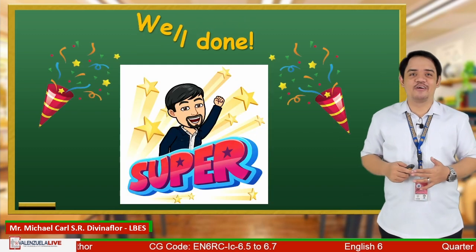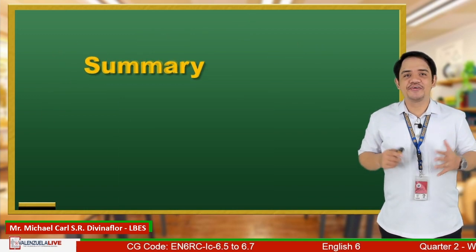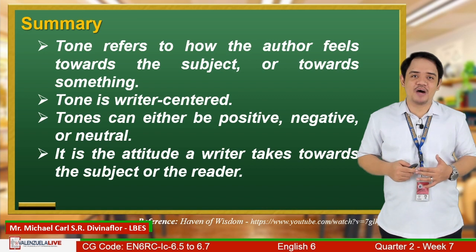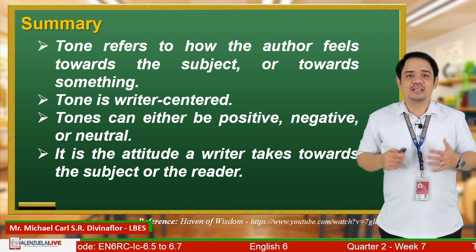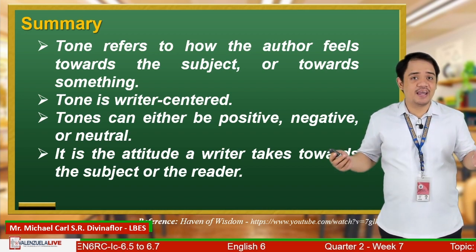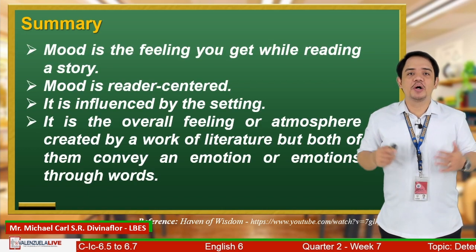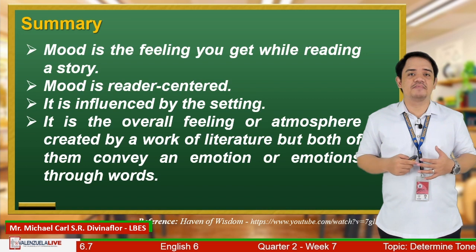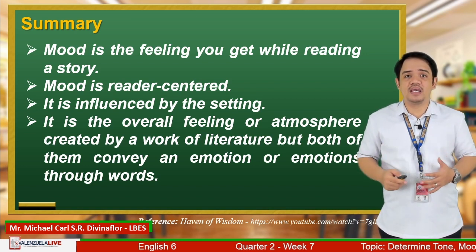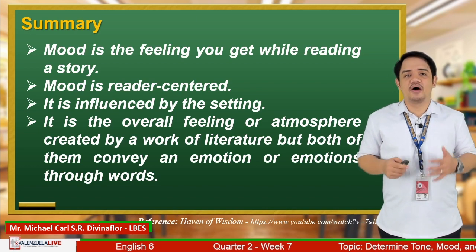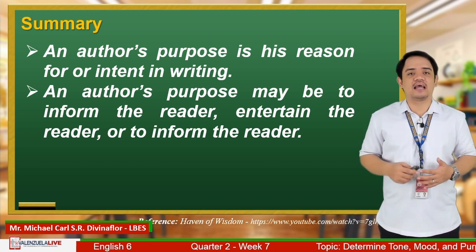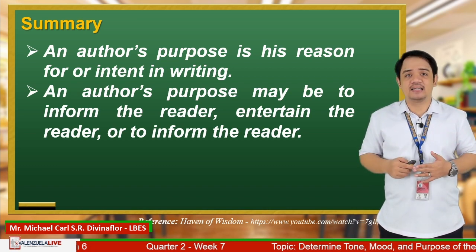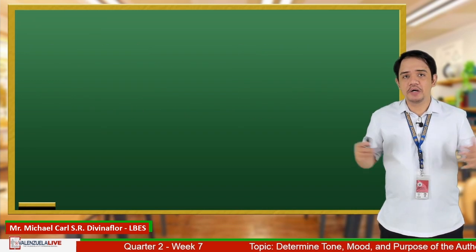As a summary to our lesson for today: Tone refers to how the author feels towards the subject or towards something. Tone is writer-centered and can be positive, negative, or neutral — it is the attitude a writer takes towards the subject or the reader. Mood is the feeling you get while reading a story. Mood is reader-centered, influenced by the setting, and is the overall feeling or atmosphere created by a work of literature. Both tone and mood convey emotion through words. An author's purpose is his reason for or intent in writing — to inform, entertain, or persuade the reader.